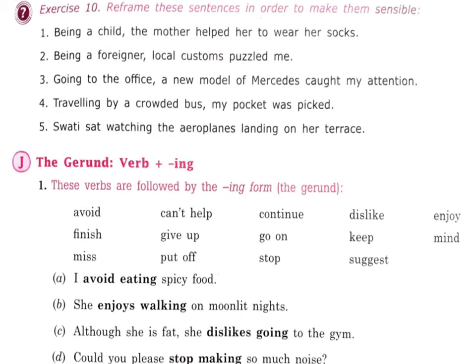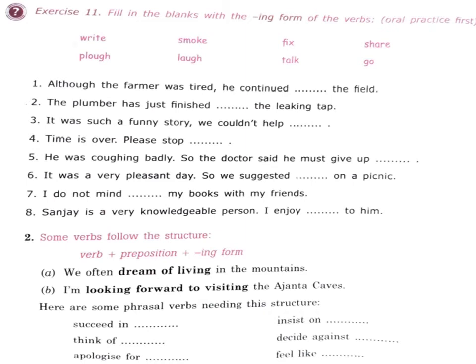The gerund — verb plus 'ing'. These verbs are followed by the 'ing' form (the gerund): avoid, can't help, continue, dislike, enjoy, finish, give up, keep. 'I avoid eating spicy food.' 'She enjoys walking on moonlit nights.' 'She dislikes going to the gym.' 'Could you please stop making so much noise?' Fill in the blanks with the 'ing' form of the verbs in your rough notebook, then tally your answers.